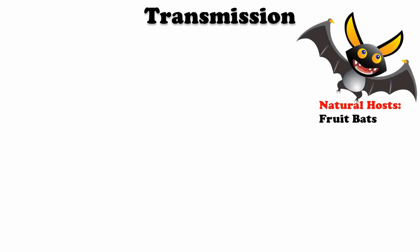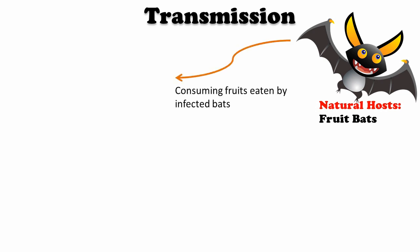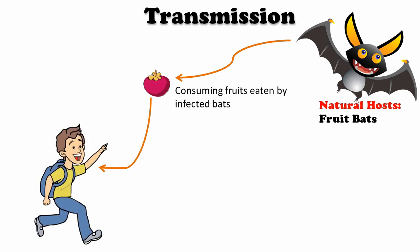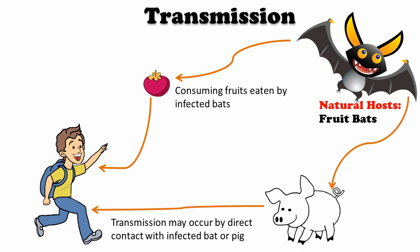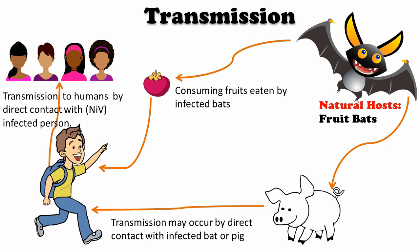Now, the transmission of this virus — how you can be affected. Fruit bats are the natural host of this virus. Consuming fruits eaten or contaminated by these infected bats is the main route by which humans get the infection. Infected bats or infected animals like pigs can also transmit the virus to humans directly. Additionally, an infected person can transmit the virus to other humans through close contact, so infected persons should not be in contact with healthy individuals.